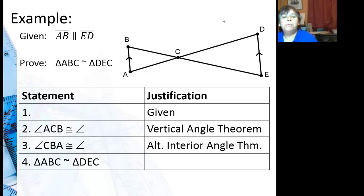In this example, we're going to prove that triangle ABC is similar to triangle DEC. So first of all, we start with the given, which is that AB is parallel to ED. And you can see that I already have the markings for the parallel on both AB and ED up here.